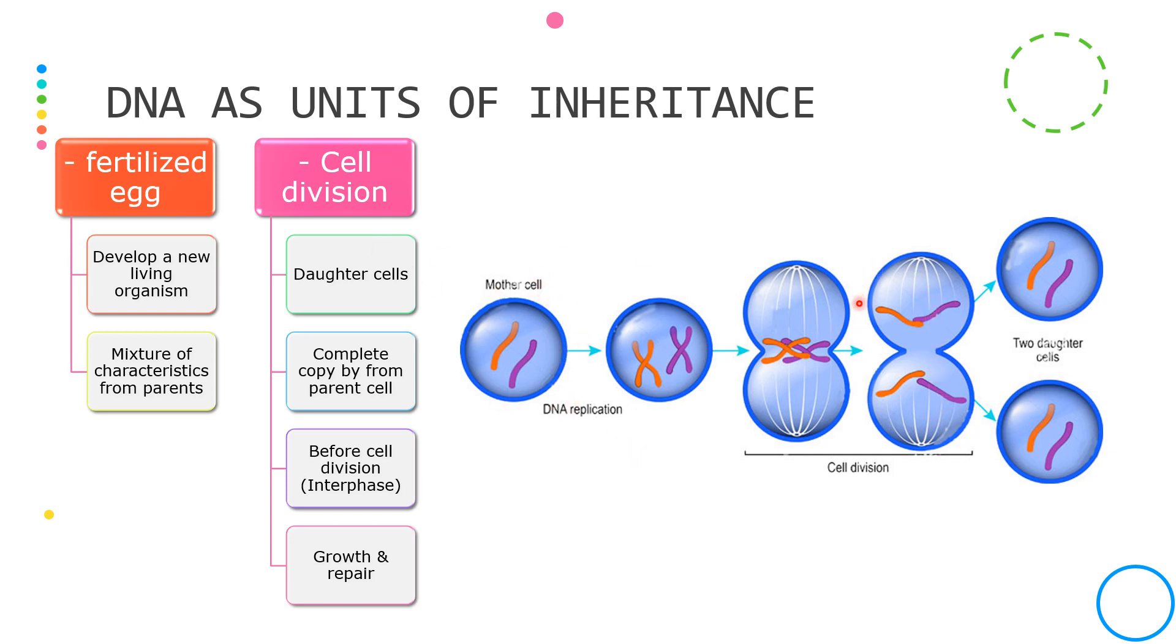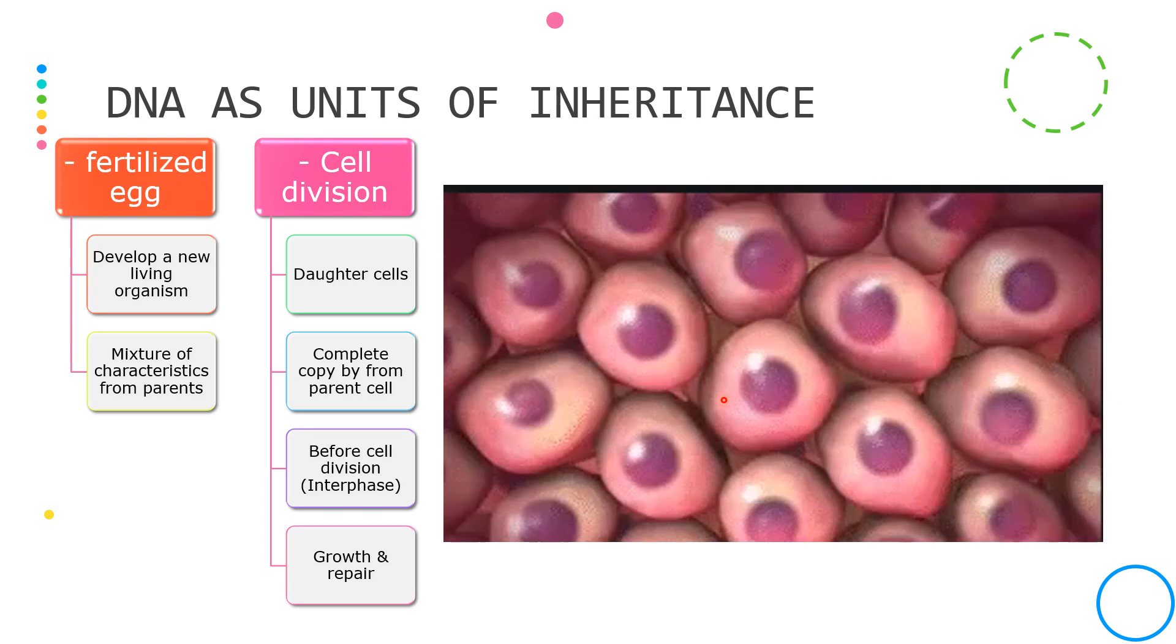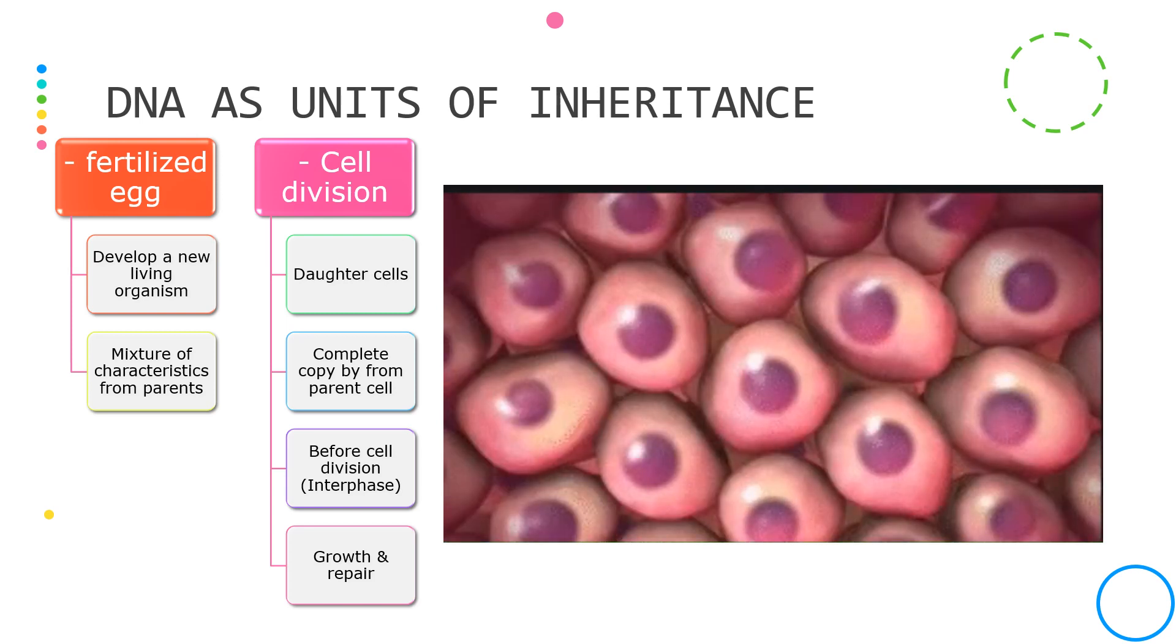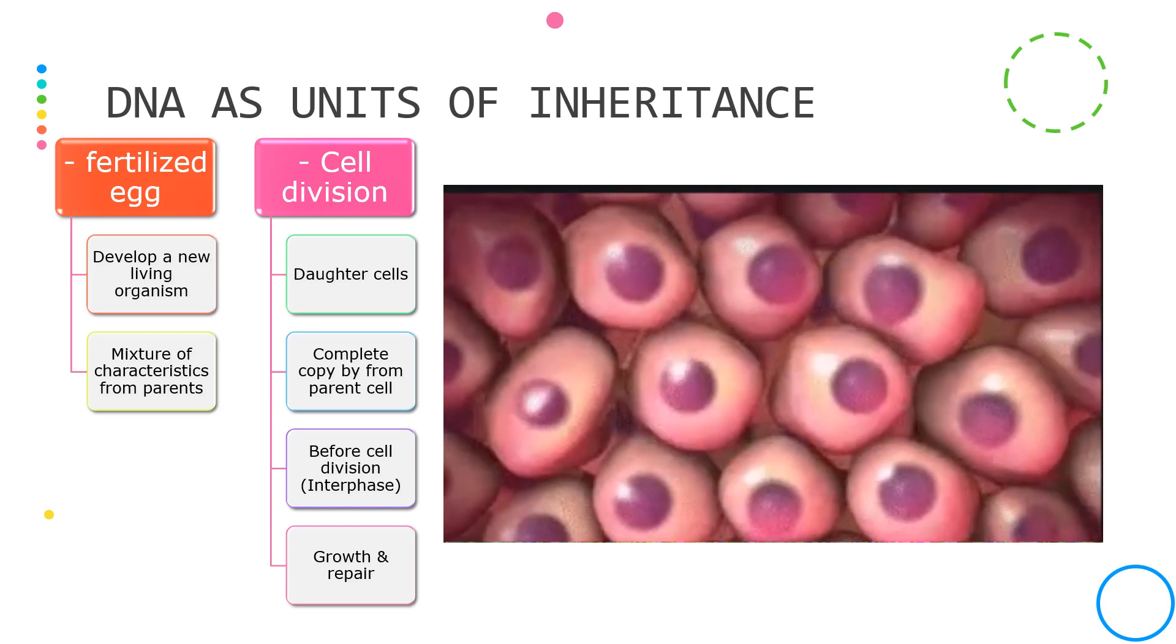Replication should happen before cell division. DNA replication is important because cells divide every time. Cells divide constantly. DNA replication and cell division might be happening as we speak.